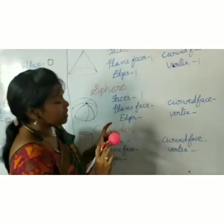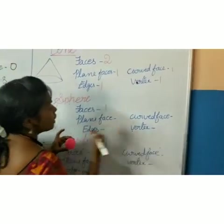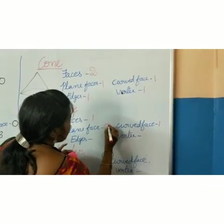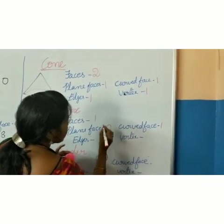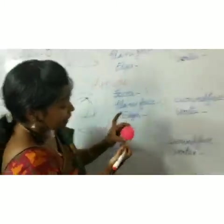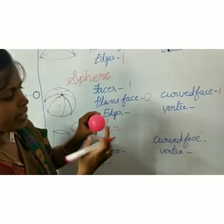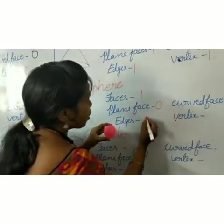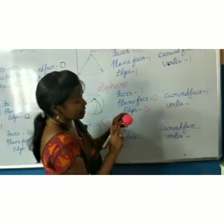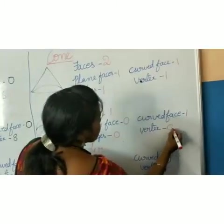What is it — plain face or curved face? Only curved face. So it doesn't have a plain face. That's the reason I am writing zero. Is there any edges? No. Once you observe this ball, is there any edges? No. So what you have to write? Zero. Vertex — is there any vertex? No. That is also zero.